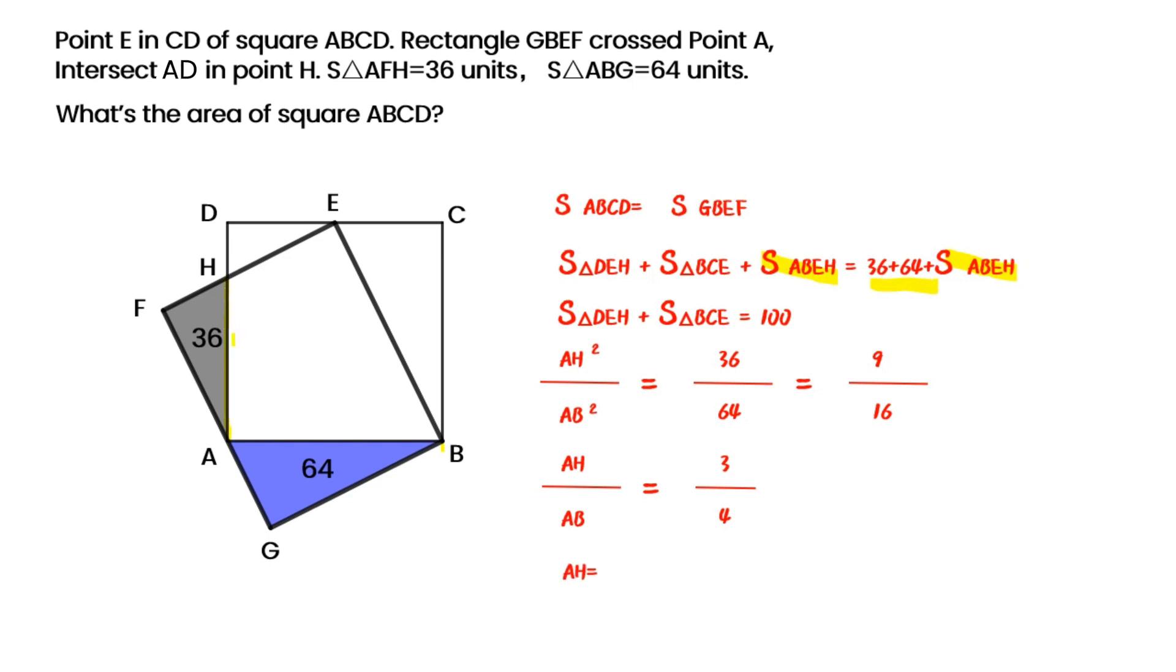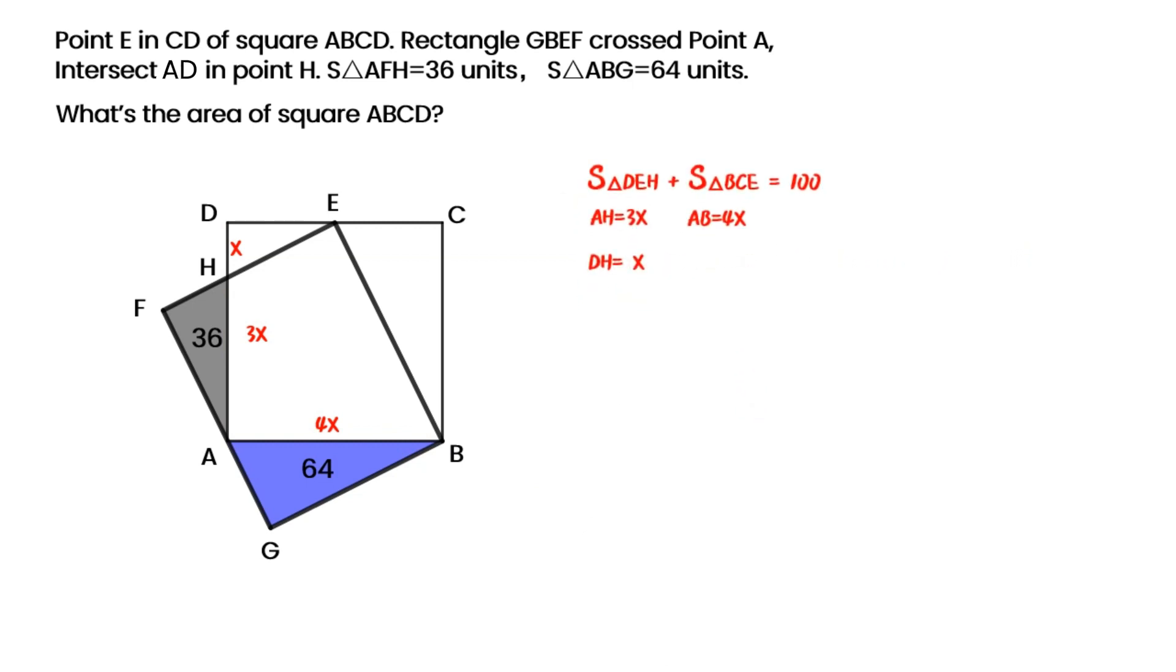Let's say AH is 3 times X. So AB is 4 times X. DH is 4 times X minus 3 times X equals X. Then let's say DE is Y. So CE equals to 4 times X minus Y. BC is also equal to 4 times X.